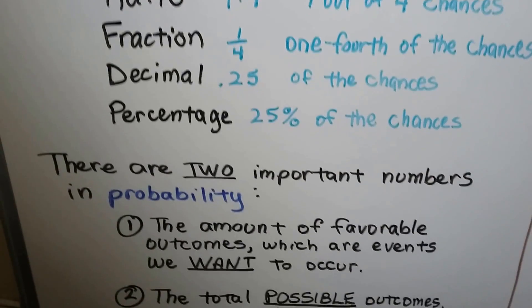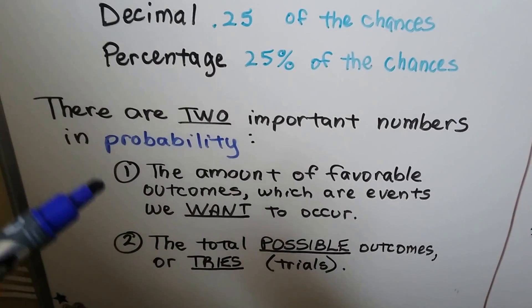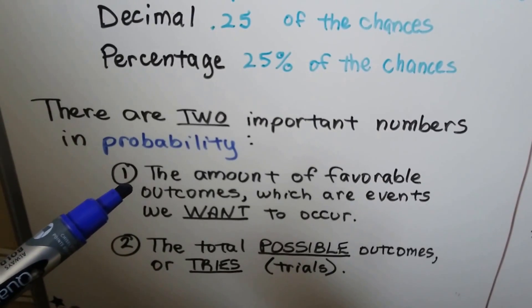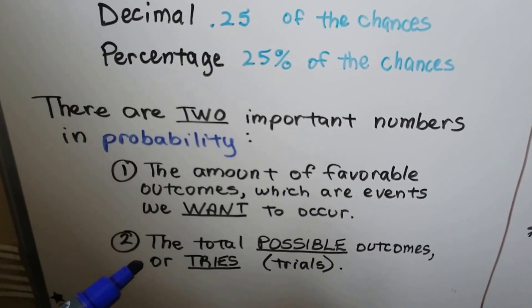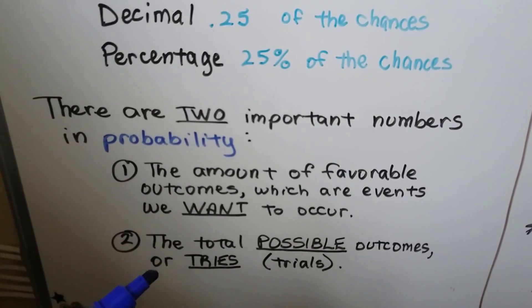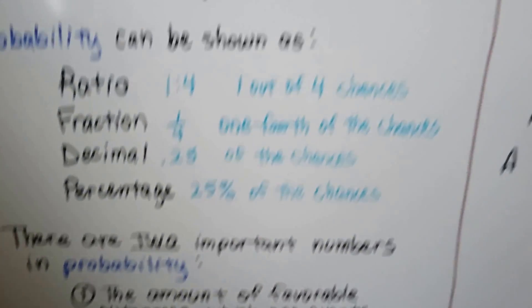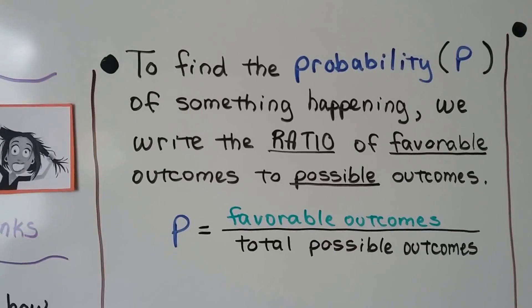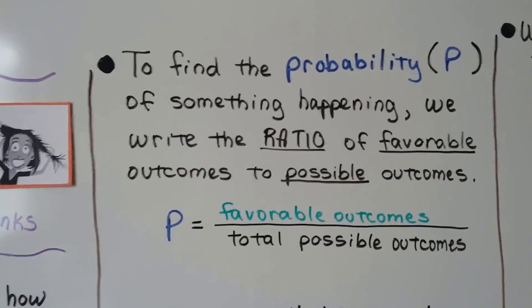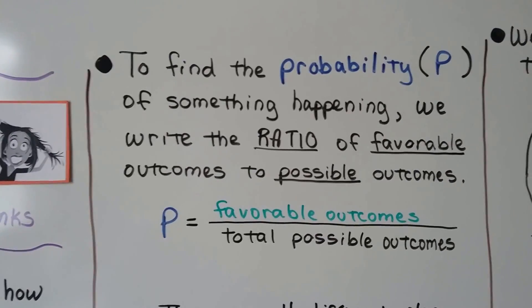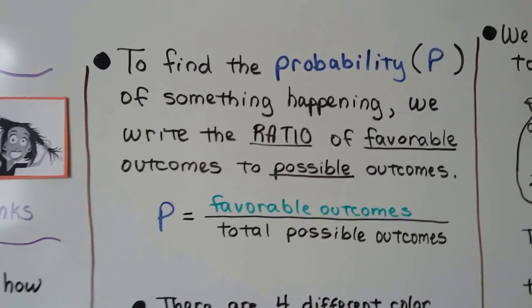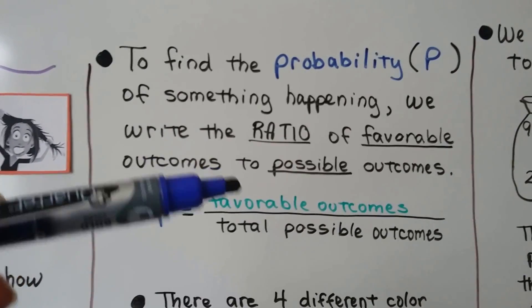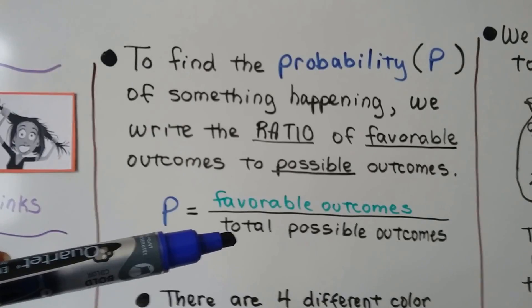And there's two important numbers in probability. The top number is the amount of favorable outcomes, which are events we want to occur. And the total possible outcomes are tries, those are the trials, the possibilities. To find the probability, and it's represented by a capital P, we write the ratio of favorable outcomes to possible outcomes. So P, the probability, is a ratio of the favorable outcomes that we want to happen over the total possible outcomes.